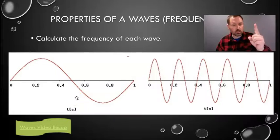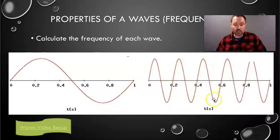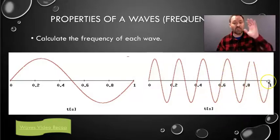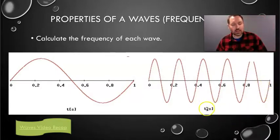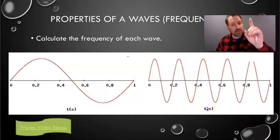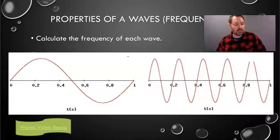It's one hertz. But let's count how many waves there are in this other example. Up, down, and back up — there's one wave. Up, down, back up — two waves. Up, down, back up — three waves. Up, down, back up — four waves. Up, down, back up — five waves. How long did this take? One second. Five waves in one second — that is five hertz.